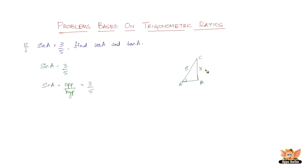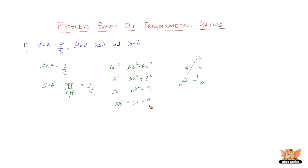The hypotenuse and one other side are given. To find cos A and tan A we need the value of AB, so let's find AB using the Pythagorean theorem: AC² = AB² + BC². We have AC = 5, so 5² = AB² + 3², which gives 25 = AB² + 9, so AB² = 16, and AB = 4 units.